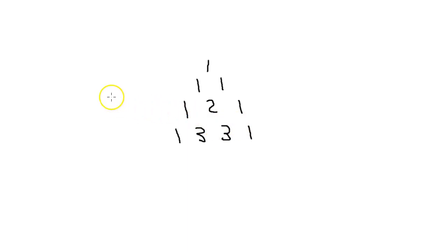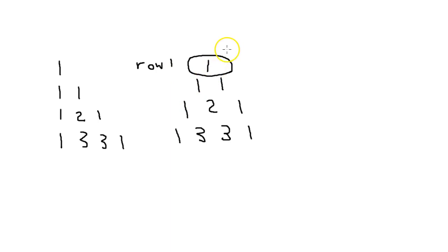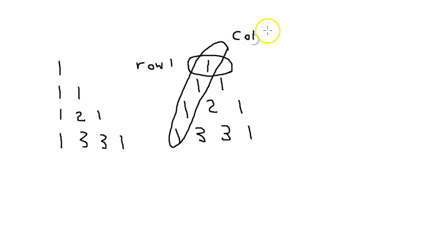We're actually going to write it in a slightly different way — kind of lopsided: one, then one one down the side, then one two one, and three one. As we do this, the first thing here is row one, and then this column here is going to be column one.